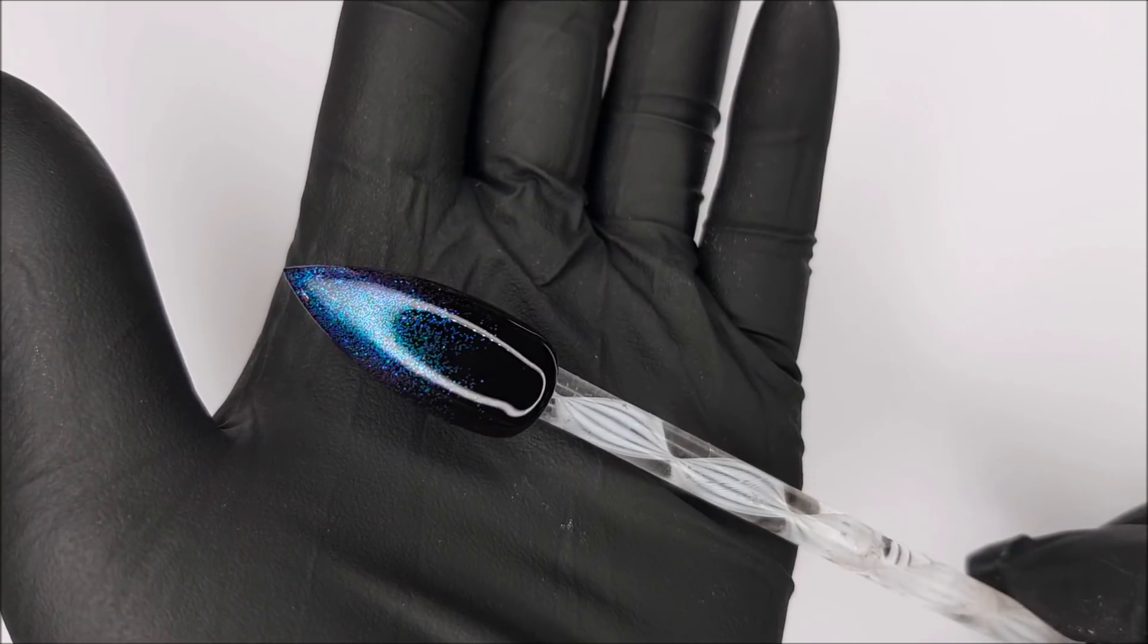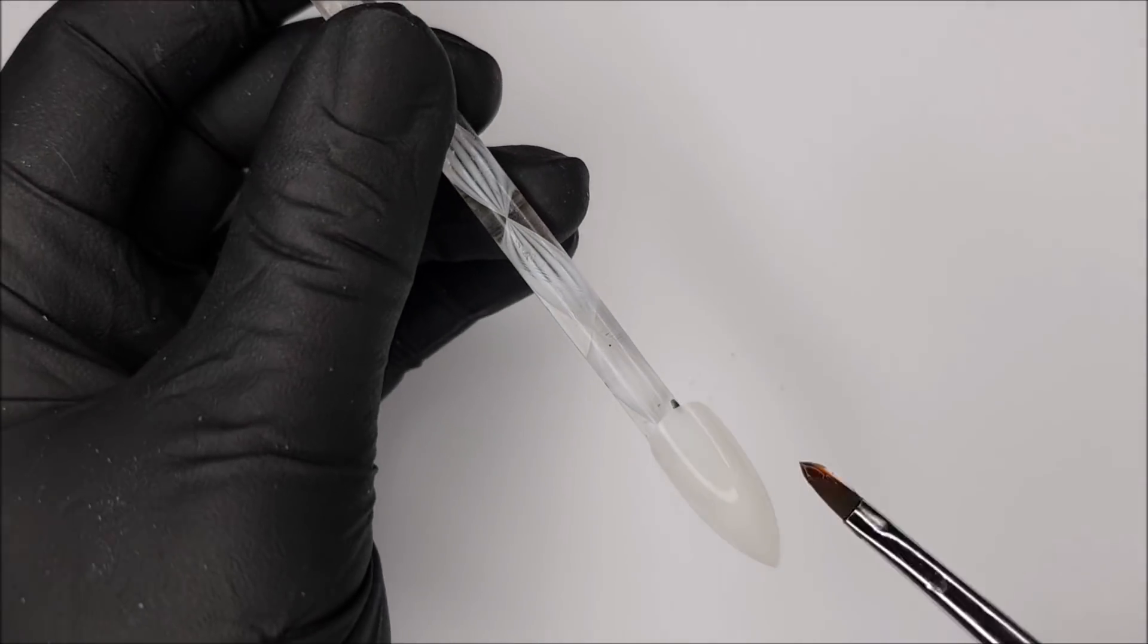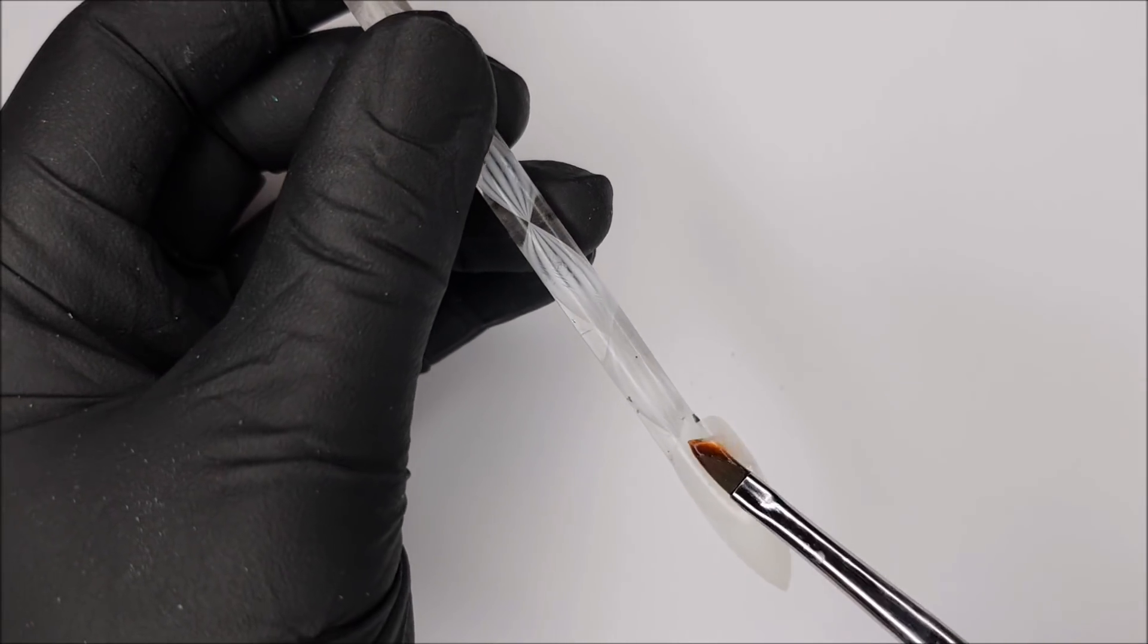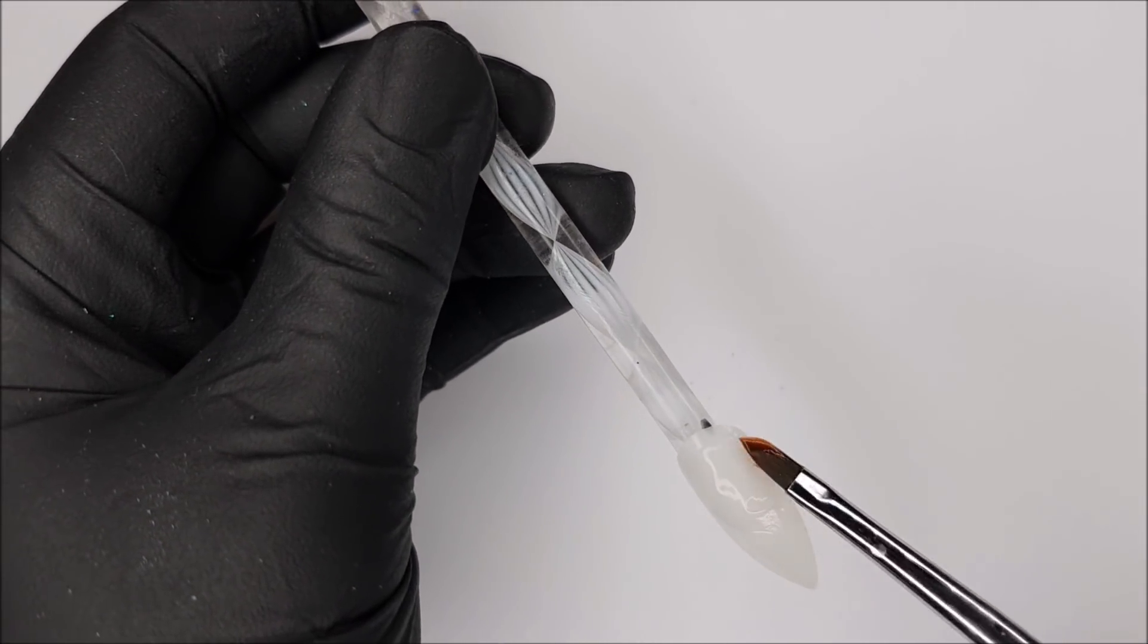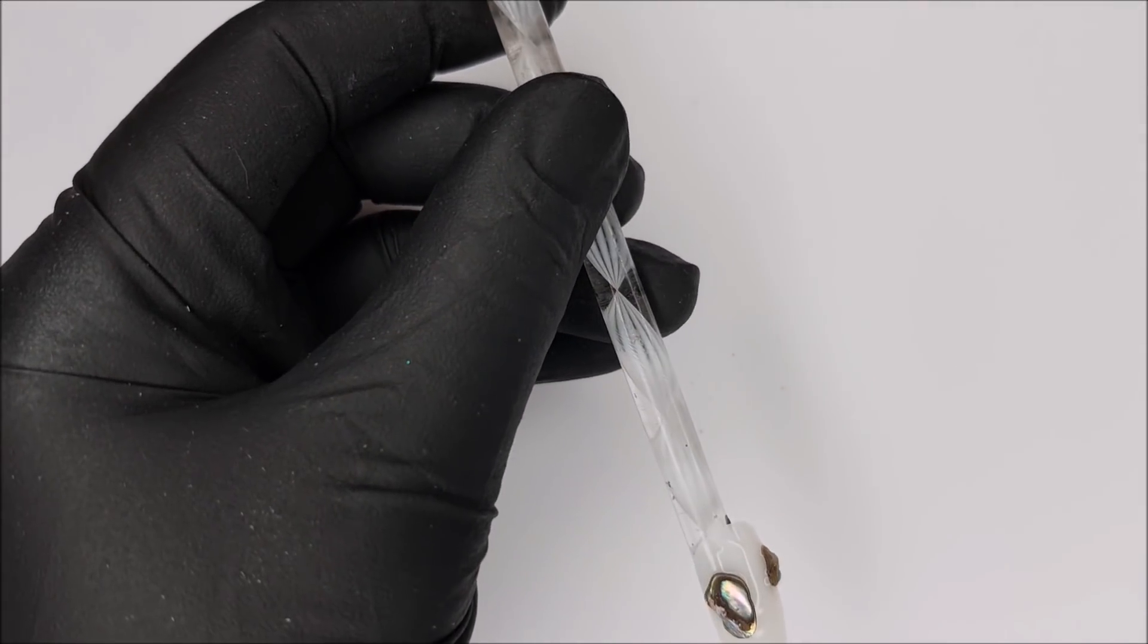For the pointer finger, we want to start by sticking some paua shell onto the nail. You can use whatever gel you use to secure your gems and charms and just randomly place the shell up the nail.